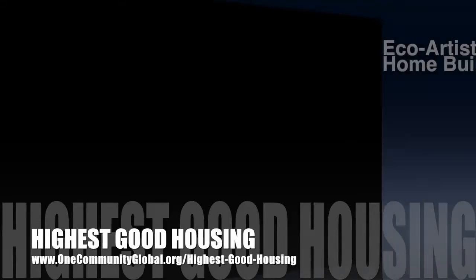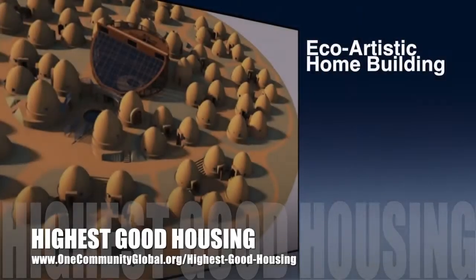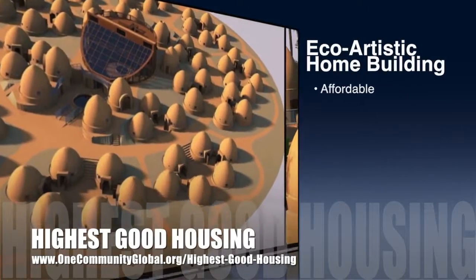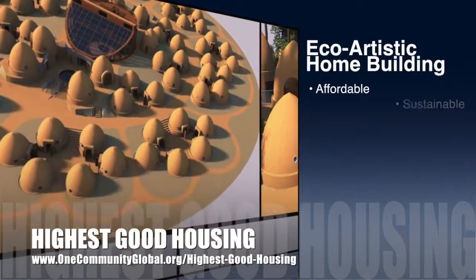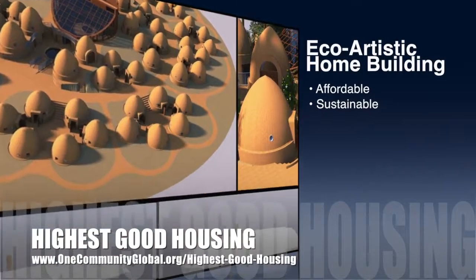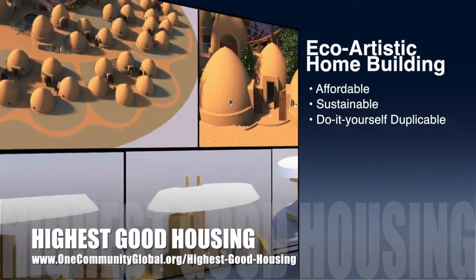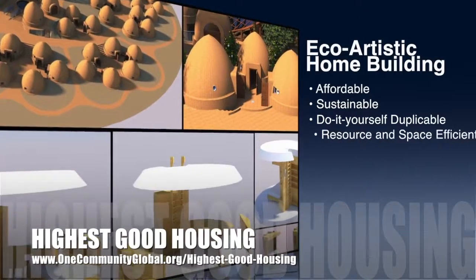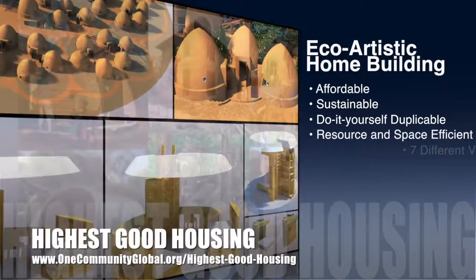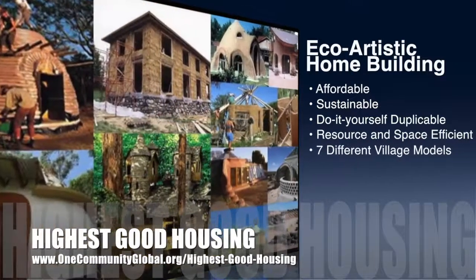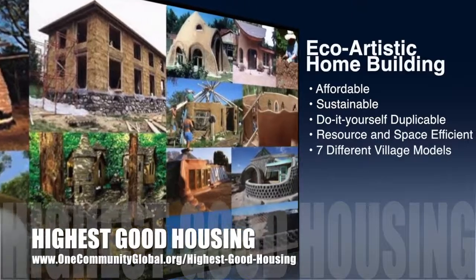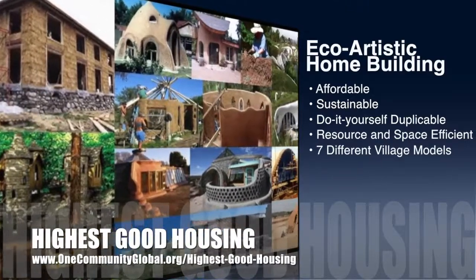The OneCommunity approach to highest good housing is eco-artistic home building that is affordable, sustainable, do-it-yourself duplicable, resource and space efficient, and consists of 7 different sustainably constructed village models.